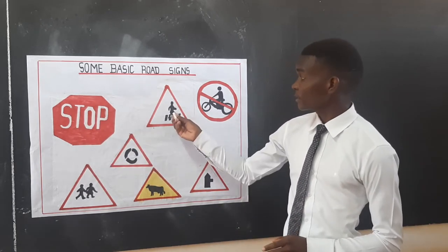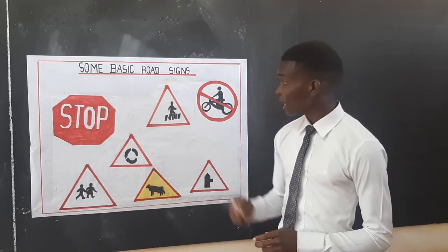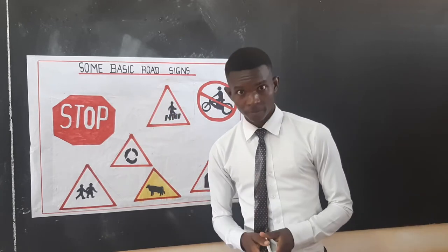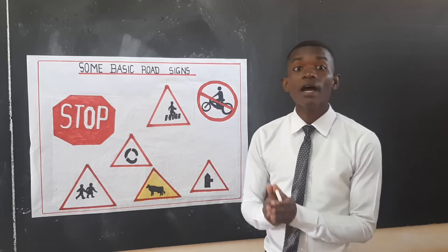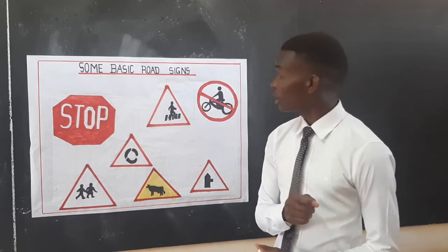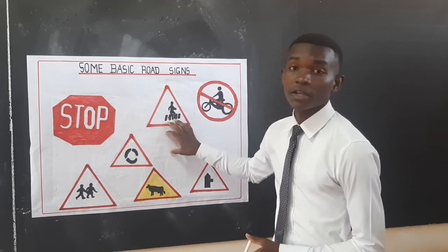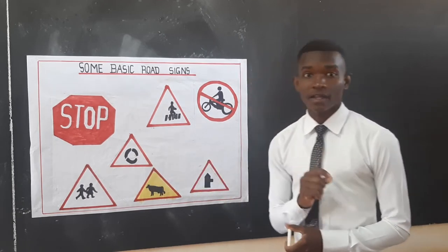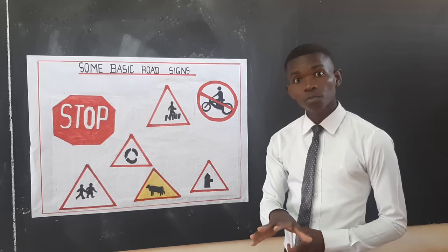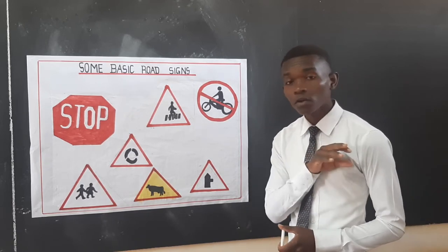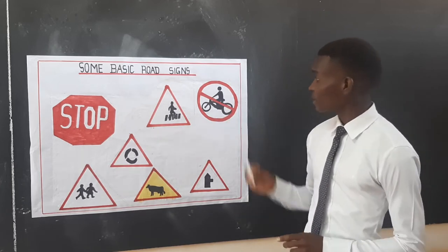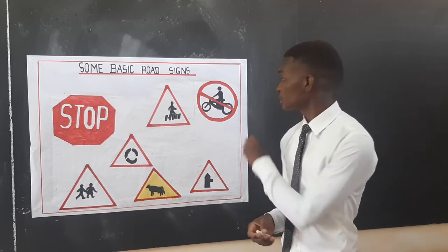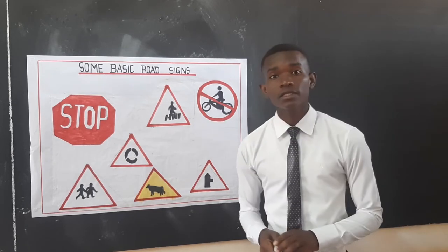We also have this sign that shows that pedestrians are crossing. So if you are moving with a vehicle and you see this sign, you have to slow down. It is simply indicating that there are people crossing there. So you reduce your speed and observe. If there is no one crossing, that is when you can pass. This other sign here shows that no cycling — you are not supposed to cycle a bicycle when you see this sign.